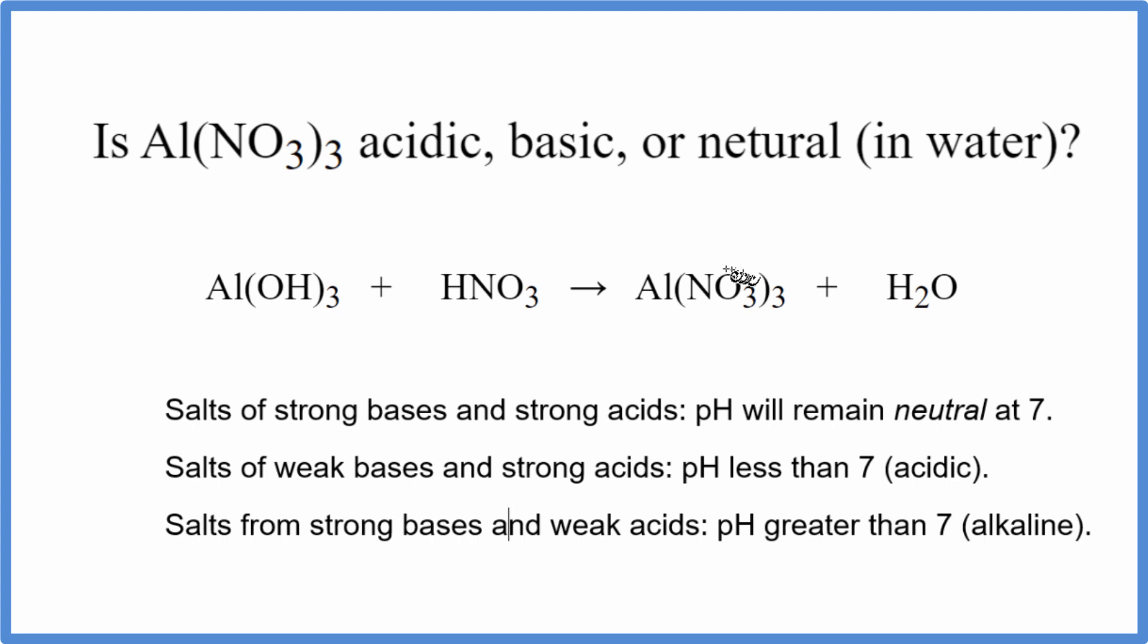To do that, we need to know the neutralization reaction that produced the aluminum nitrate. In this case, we have aluminum hydroxide, that's our base, plus HNO3, that's our acid. They come together and produce aluminum nitrate, that's the salt, and water.